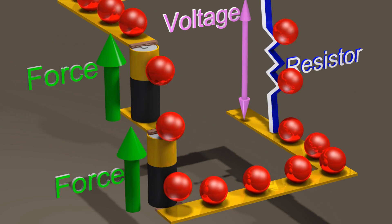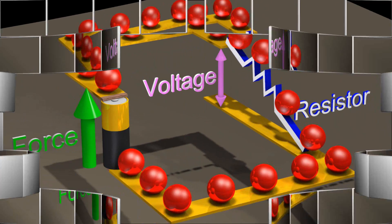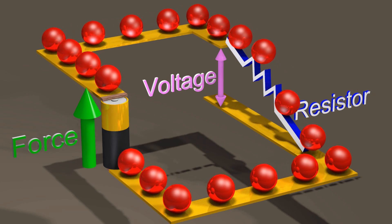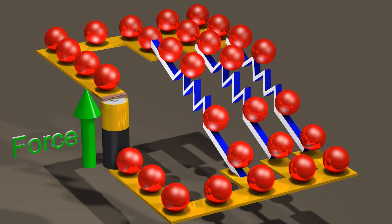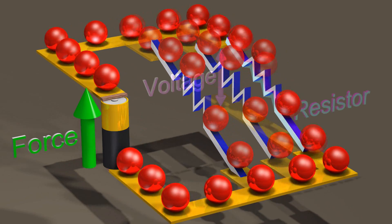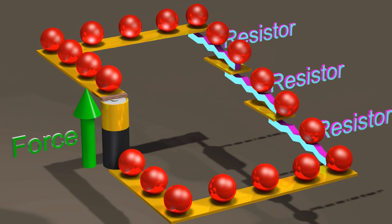If we double the voltage drop across the resistor by placing two batteries in series, we will double the current flowing through the resistor. Now suppose that we keep the number of batteries constant, but instead increase the number of resistors in parallel. Multiple resistors in parallel have the same effect as a single resistor with a smaller resistance. On the other hand, multiple resistors in series have the same effect as a single resistor with a larger resistance.